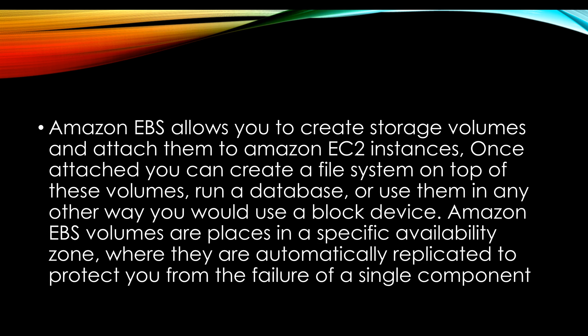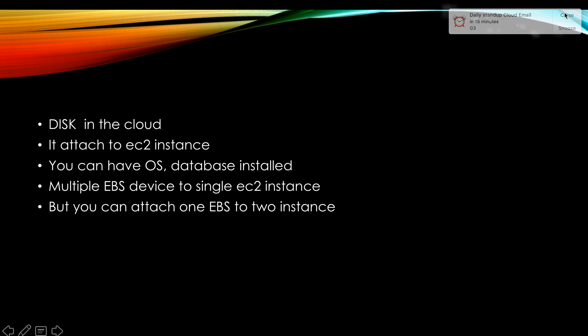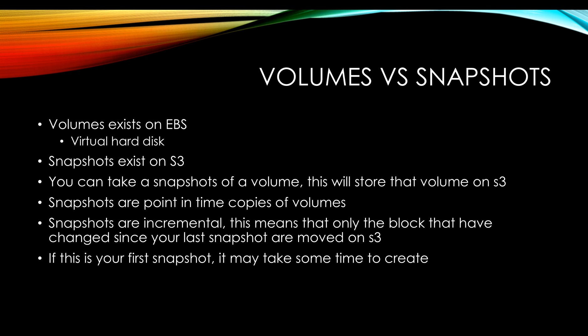Amazon EBS volumes are placed in a specific availability zone where they are automatically replicated to protect you from the failure of a single component. It's essentially a virtual disk in your cloud, attached to your EC2 instance. You can have an OS and database on that EC2 instance, but you cannot attach a single EBS to multiple instances.